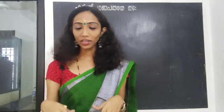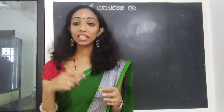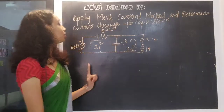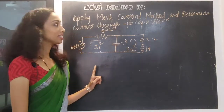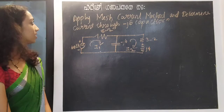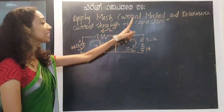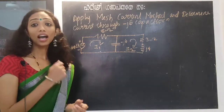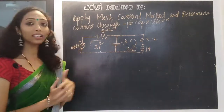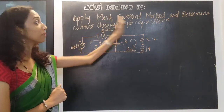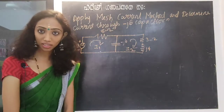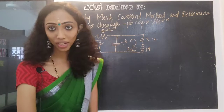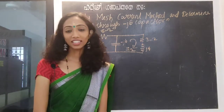Apply Mesh Current Method and determine the current through the minus J6 ohm capacitor. Because this is minus J6. That capacitor current is the question. By using Mesh Current Method — the loop method, that is the Mesh Analysis.